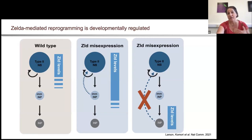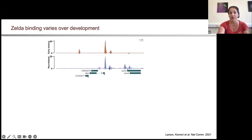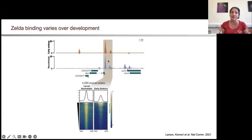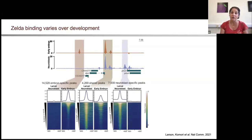So we asked where is Zelda bound in these neural stem cells, and we wanted to compare this to the binding in the embryo. We performed ChIP-seq on brains enriched for these neural stem cells and identified 12,000 binding sites. We overlaid that with the ChIP-seq performed in the early embryo and identified 4,000 regions shared between the larval neural stem cells and the early embryo, just as we'd expect for a pioneer factor that might be agnostic to chromatin environment. But we identified thousands more regions unique to each tissue type.